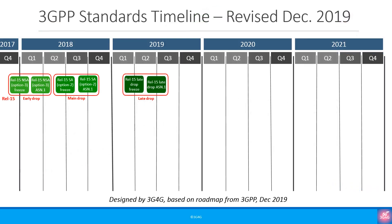The first set of 5G standards came as part of 3GPP Release 15. Because 5G required a lot of work and its completely new architecture, the specifications had to be split into three different parts: the early drop which came in December 2017, the main drop that came in June 2018, and the late drop which came in March 2019.